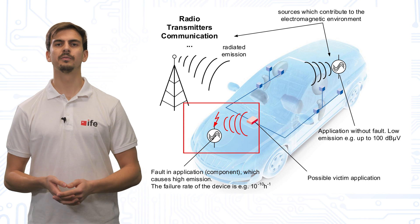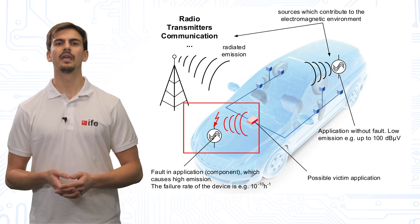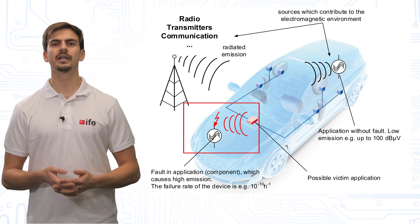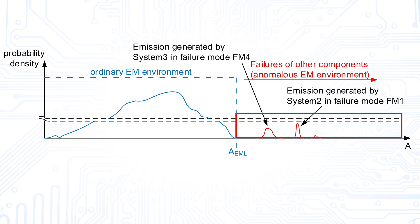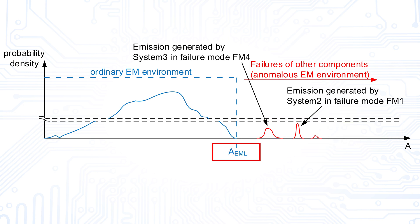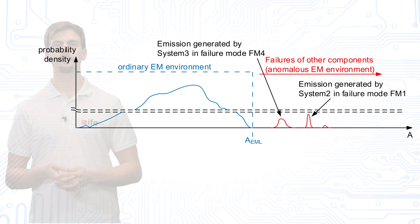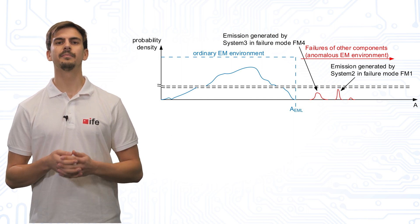Only a small subset of all possible system failure modes tend to generate high emission. For example, if a control unit stops working, the generated emission can even go down. In this figure we have sketched the probability of the electromagnetic disturbance in an automotive application. It presents the distinction between the systematic electromagnetic environment and the electromagnetic environment due to faults. It shows that low amplitude electromagnetic disturbances are more likely than very high amplitude disturbances. The disturbance is an amplitude-dependent function. In our approach, we therefore introduce the environmental amplitude limit, which defines the transition between the ordinary and the anomalous electromagnetic environment — that is dominated by electromagnetic emissions generated by a system in a failure mode.